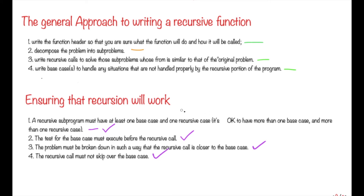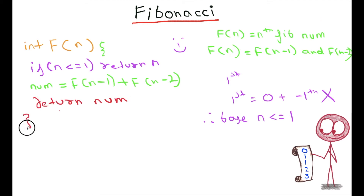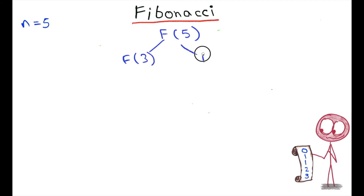We are done with all these steps, so our recursion will work as expected. The last step is to return what we have calculated — we return the number that gives the nth Fibonacci number. Now let's see what happens when we call our function for n equal to 5. f(5) will call f(4) and f(3), because 5-1=4 and 5-2=3.